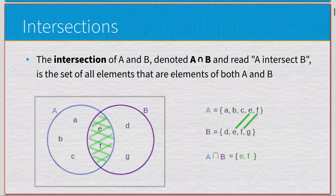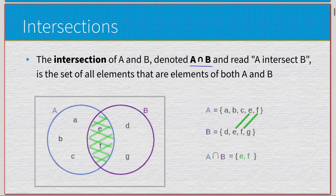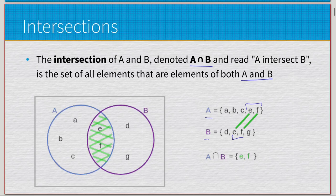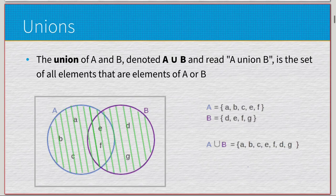Starting with basic intersections: the intersection of A and B, denoted as such, is read as 'A intersects B' and is a set of all elements that are members of both A and B. If set A is {a, b, c, f} and B is {d, e, f, g}, the elements they share are e and f. On a Venn diagram, that's just the overlapping section, so A intersect B is {e, f}.